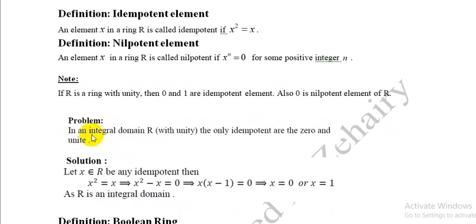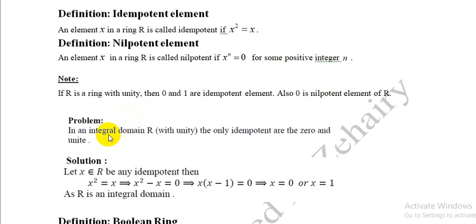Problem: In an integral domain R with unity, the only idempotent elements are 0 and 1. An integral domain is a commutative ring which has no zero divisors. The zero divisor means that if AB = 0 and A and B are both nonzero, then A and B are called zero divisors.